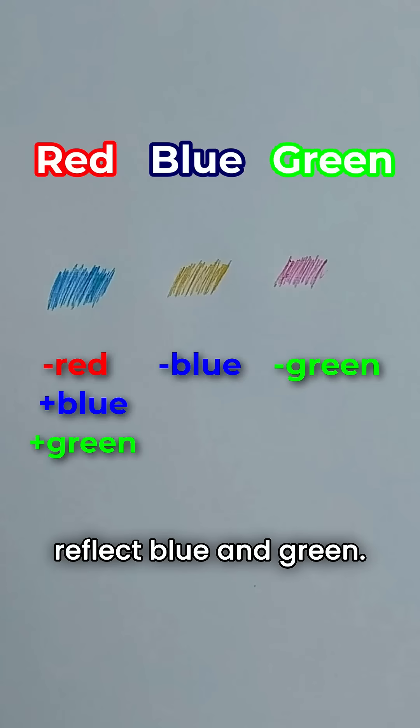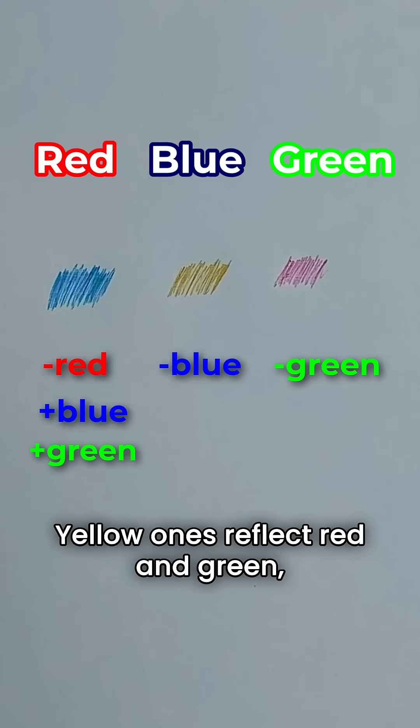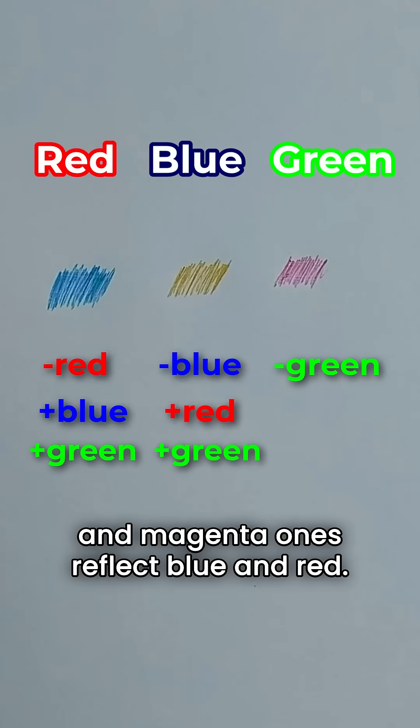This means that cyan pigments reflect blue and green, yellow ones reflect red and green, and magenta ones reflect blue and red.